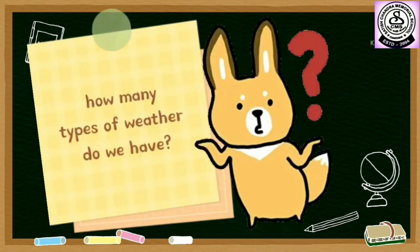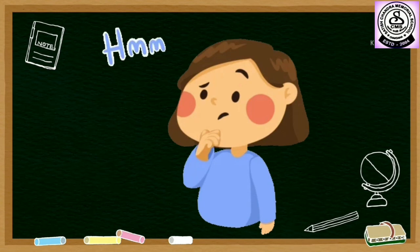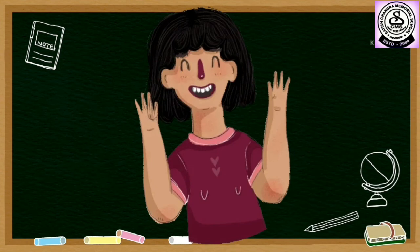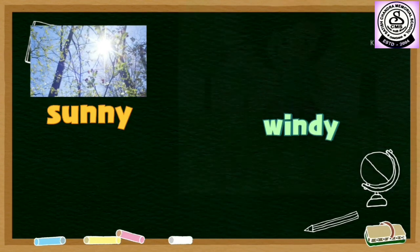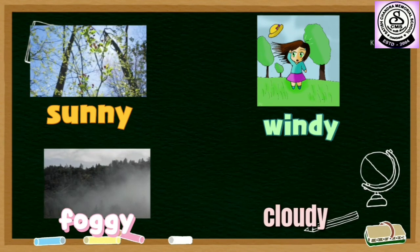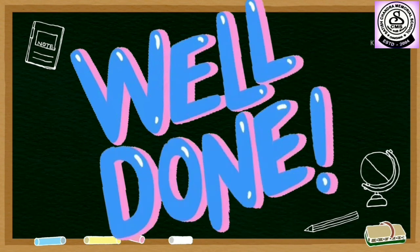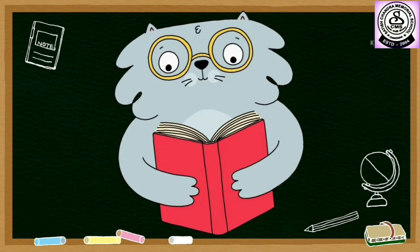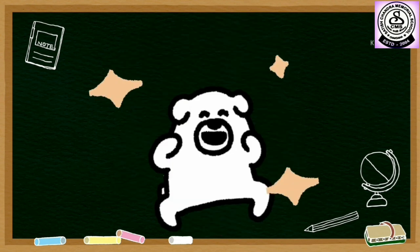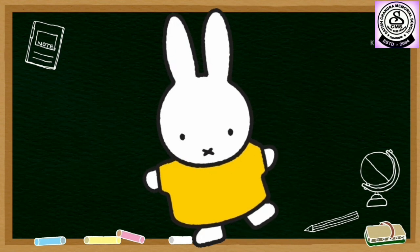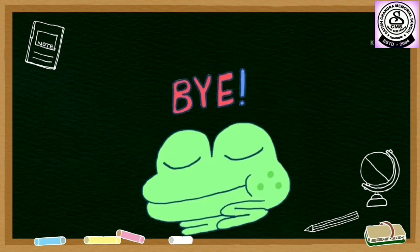So, my dear kids, tell me how many types of weather do we have and what are they? Yes, there are four types of weather and they are: sunny, windy, foggy, and cloudy. Well done, my dear kids! I hope that you all will revise the weather and that you have enjoyed today's video. Until then, bye bye and take care.